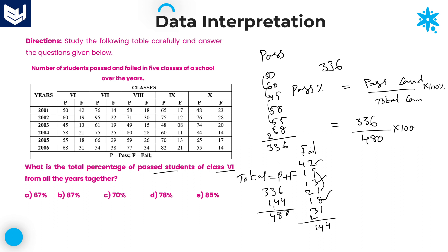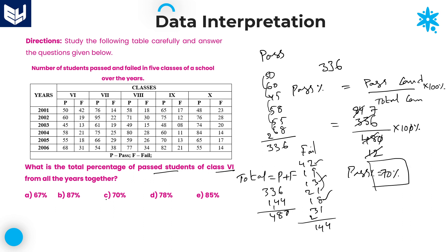Now calculate the percentage: 336 divided by 480 into 100. The two zeros cancel. Cancel with the 4 table: 4 times 12 is 336 side — giving 12 over 4 which is 84 over... 12 times 7 is 84, times 10 is 70. Passed percentage of class 6 over all the years is equal to 70%. Option C is the right answer. This is all about this session. I hope you enjoyed the session. Thank you, thanks for watching.